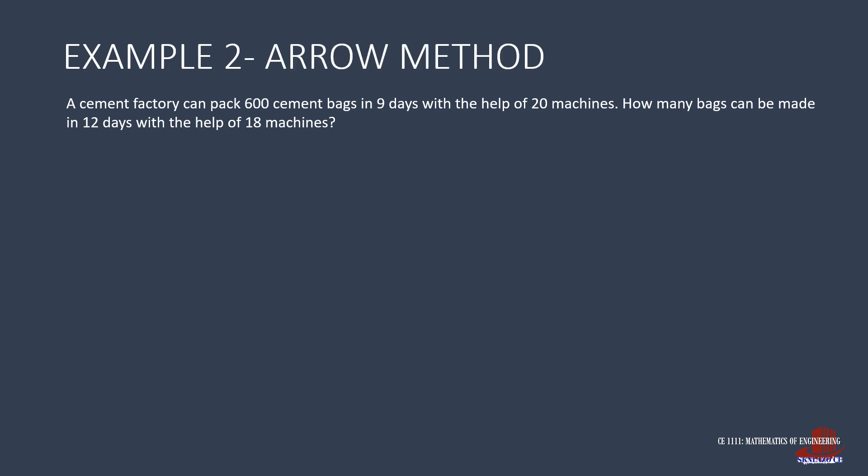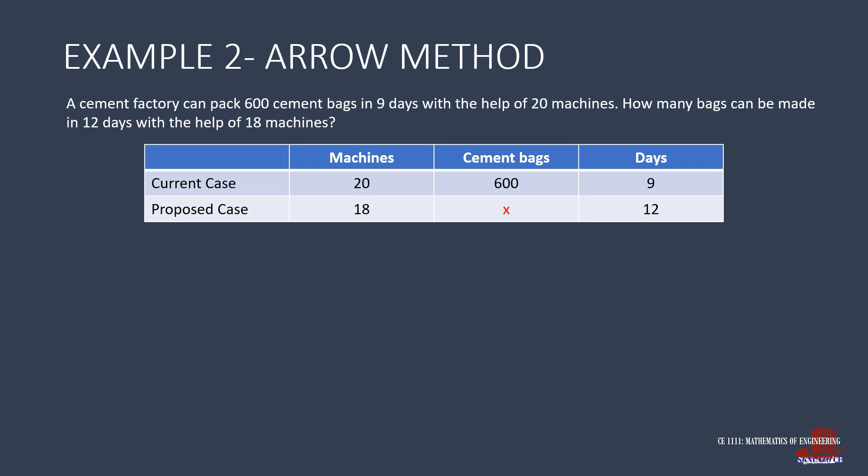Solving the same problem using the arrow method, we place the incomplete quantity at the middle of the table. Then analyze the trends. First is between machines and cement bags. The lesser machines working can yield lesser bags of cement, so that is a direct proportion. Next is to compare days and cement bags. That is, lesser days of manufacturing will result to lesser bags of cement produced. Another direct proportion.